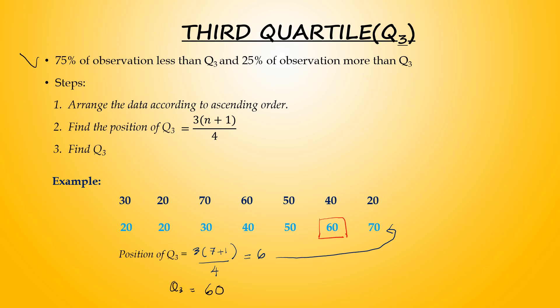What happens if we add another observation, making N equal to 8? Arrange the data with the new highest value. Find the position of Q3. Right now N is 8, so you get Q3 position equal to 6.75.